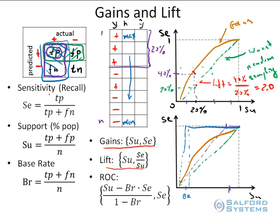At this point we have looked at the typical prediction scenario, introduced the concept of sensitivity, and introduced the concept of support. On the gains curve the horizontal axis is support, and the vertical axis is sensitivity.